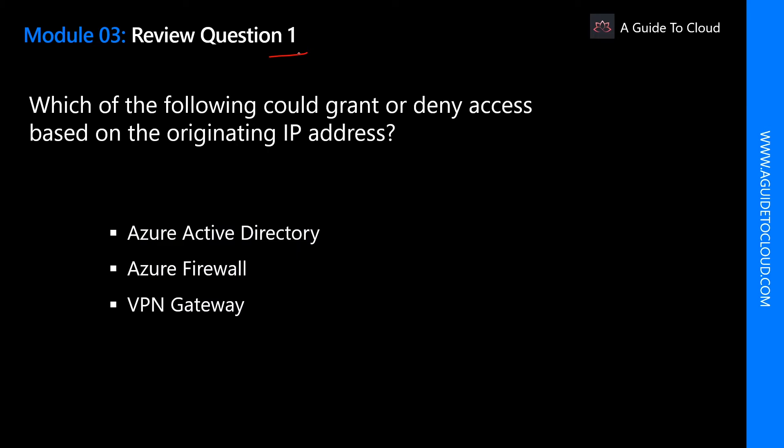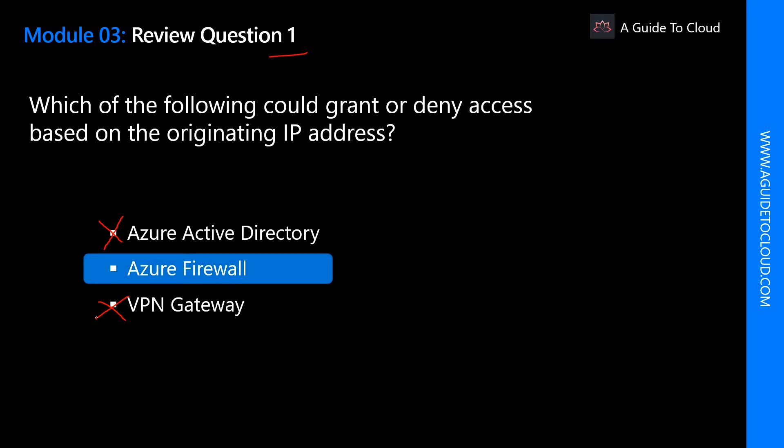The first question is: which of the following could grant RDP access based on the originating IP address? Azure Active Directory — definitely not; Azure AD is your identity and access management solution. VPN Gateway — definitely not; VPN gateways are used to create VPN tunnels. The right answer is Azure Firewall. Azure Firewall grants server access based on the originating IP address. You create firewall rules that specify ranges of IP addresses, and only clients from the granted IP address will be allowed to access the server.